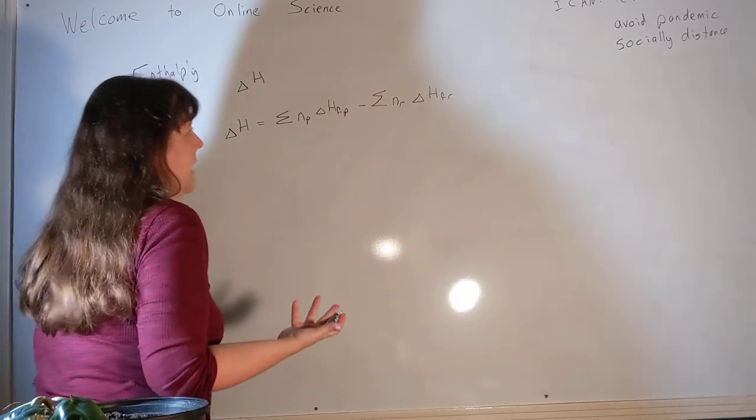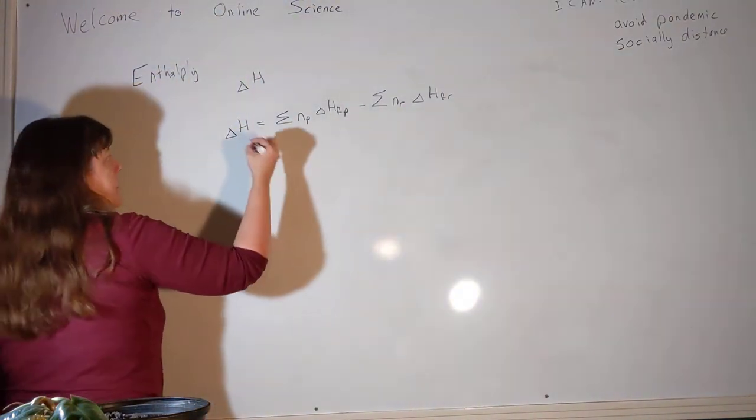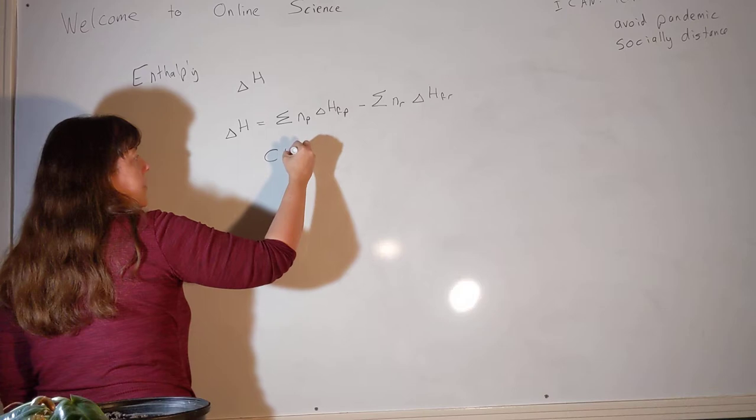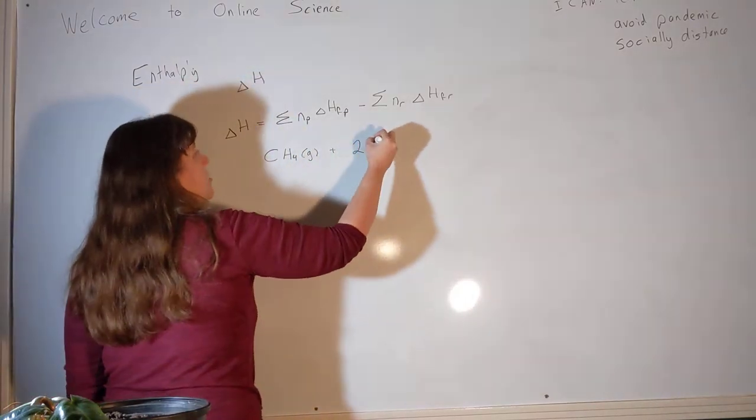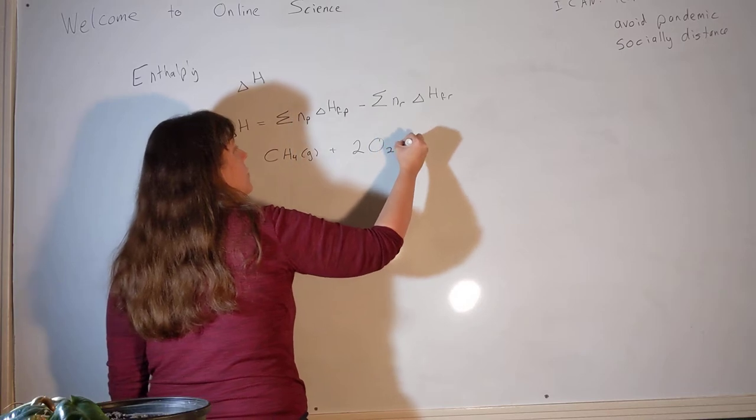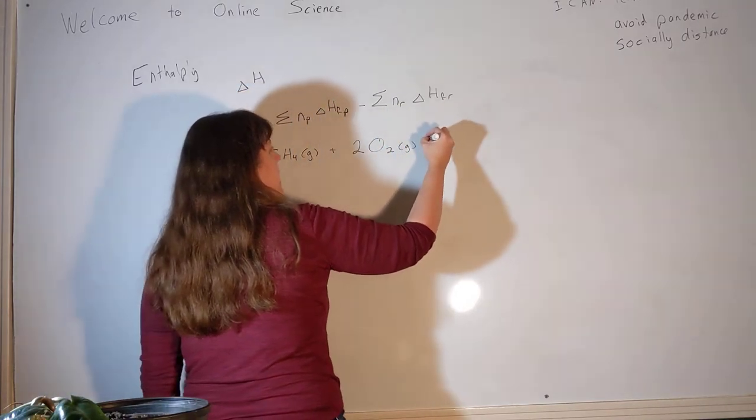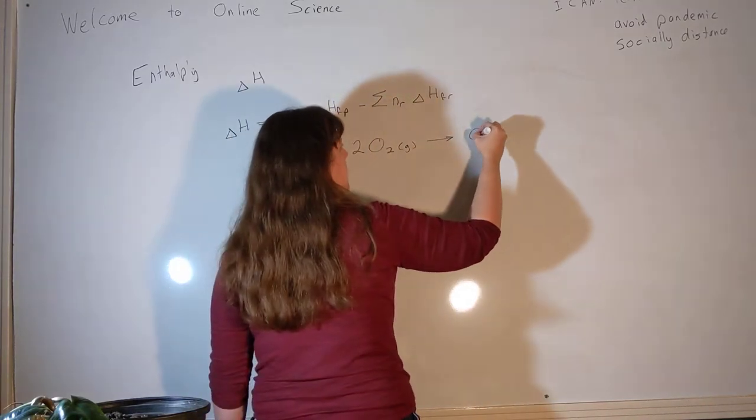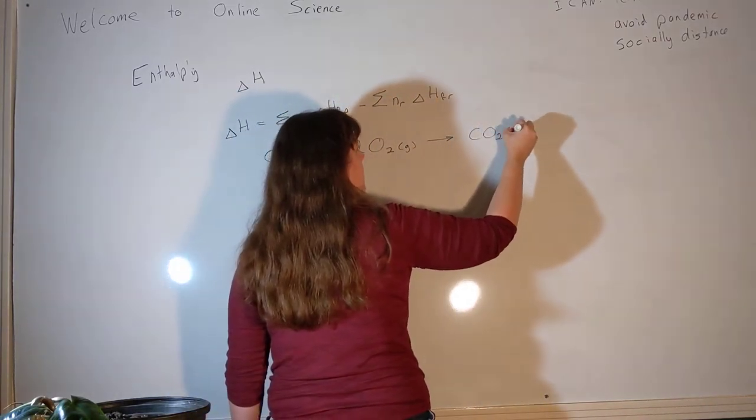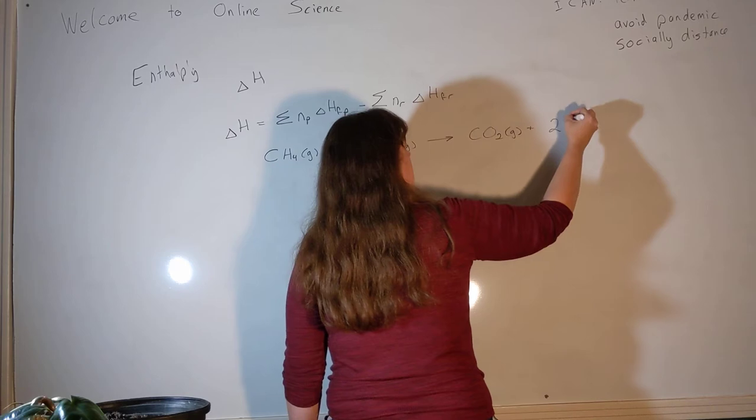Let's start with a reaction. The reaction that I like to use here is the combustion of methane. We used this in gas stoichiometry just last week, and we will talk about how we can do heat stoichiometry here in just a second. So we have methane gas reacting with two molecules of oxygen to create carbon dioxide gas and two waters.